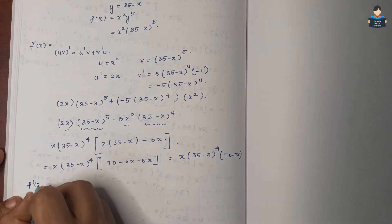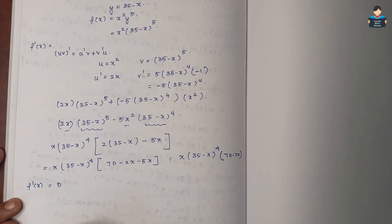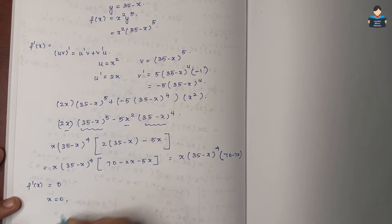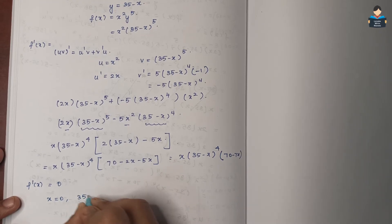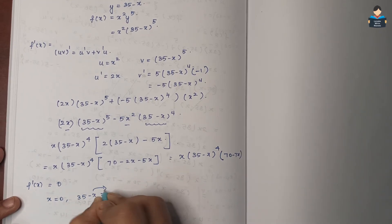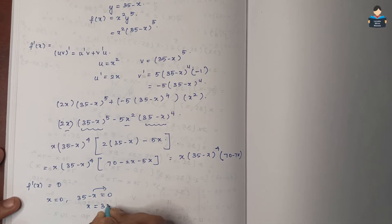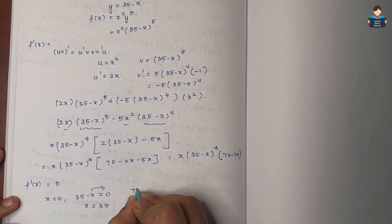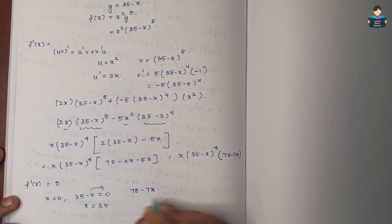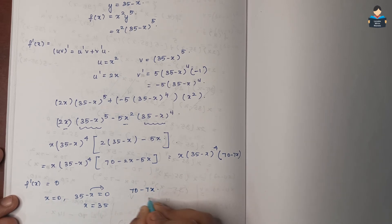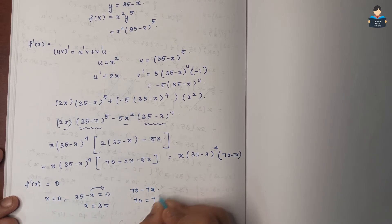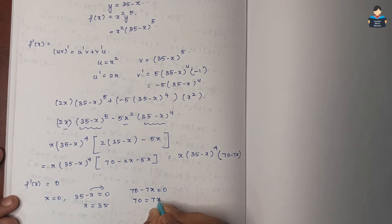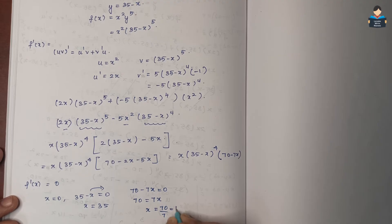Setting f'(x) = 0: x = 0, or 35 minus x = 0 giving x = 35, or 70 minus 7x = 0 giving 7x = 70, so x = 10.